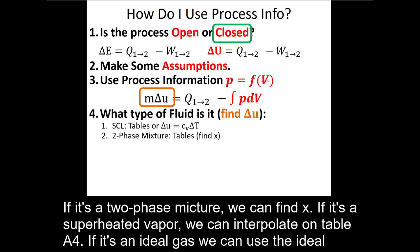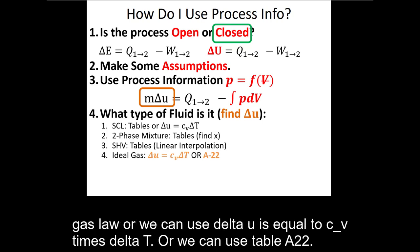If it's a two-phase mixture, we can find X. If it's a superheated vapor, we can interpolate on table A4. If it's an ideal gas, we can use the ideal gas law, or delta U equals CV times delta T, or we can use table A22.